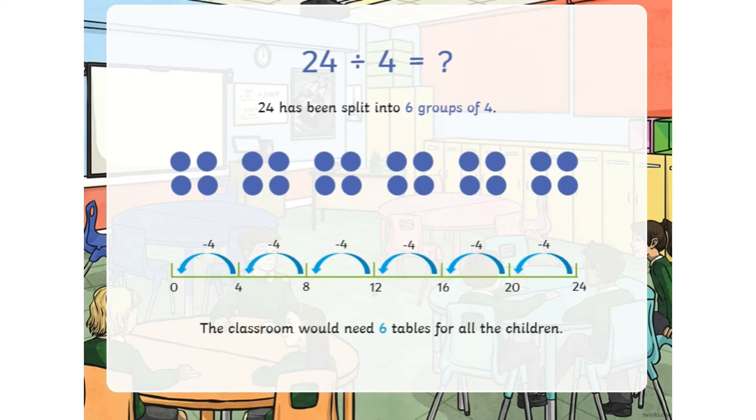So using arrays to demonstrate, 24 has been split into one, two, three, four, five, six groups of four.